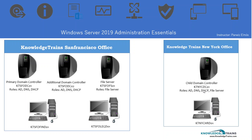I can explain what a child domain controller is and what it does. As you can see, we have the same naming convention, and we have Active Directory, DNS, DHCP, and file server roles there. We will be sharing data and testing it between the two different sites.